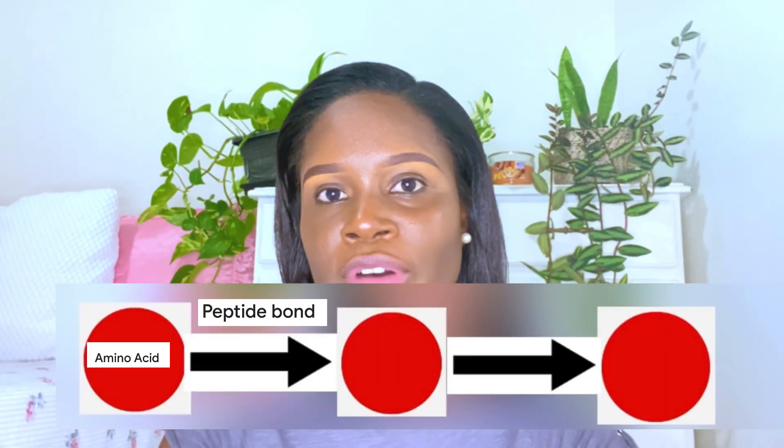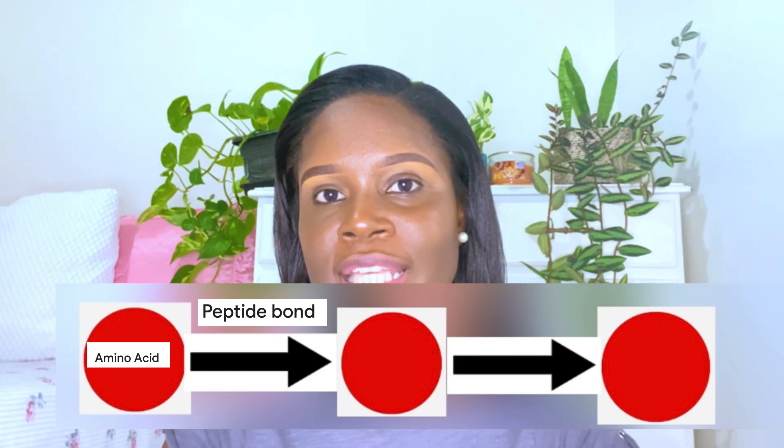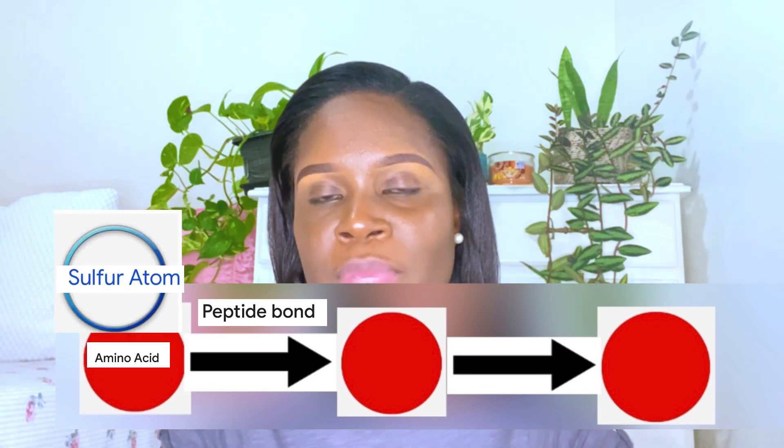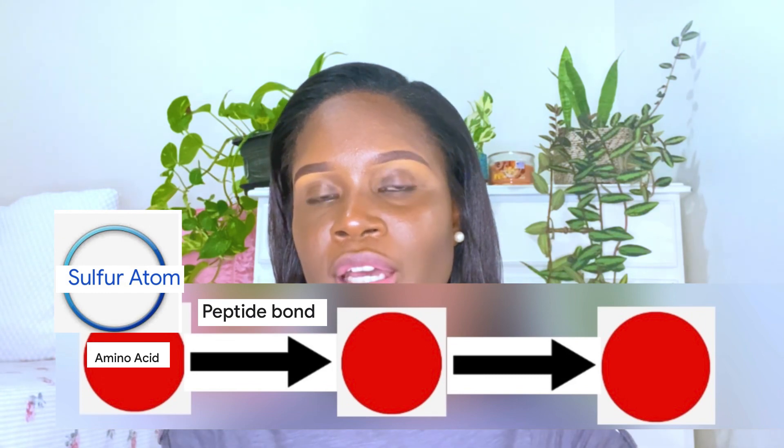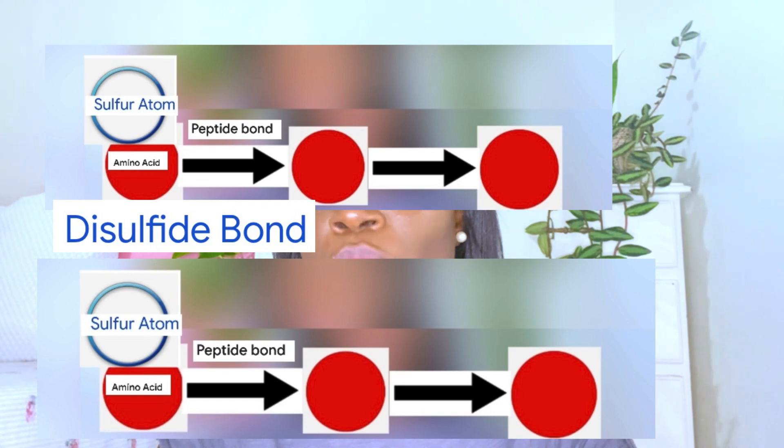A disulfide bond is made up of two sulfur atoms. These sulfur atoms are connected to the amino acids — several different amino acids are connected by a sulfur atom, and when these sulfur atoms come together, they form a disulfide bond. So two sulfur atoms give us a disulfide bond. Once the relaxer gets inside the hair shaft, its job is to make the hair straight by breaking those disulfide bonds.